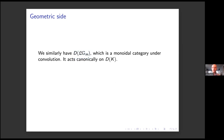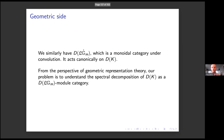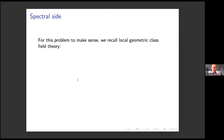In the same way, there's a category of D-modules on loops into Gm, the multiplicative group. The action of Gm on A1 plays a big role here. This is a monoidal category under convolution — in fact, symmetric monoidal — using the group structure. So I can tensor objects together and the tensor product is commutative. As such, it acts canonically on D-modules on the space of Laurent series, since Gm acts on A1 and loops on Gm acts on loops into A1. From the perspective of geometric representation theory, you can think of our problem as trying to understand the spectral decomposition of this category as a module for loops on Gm.